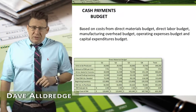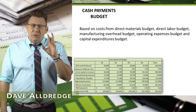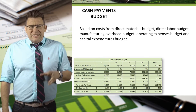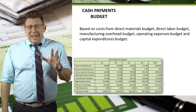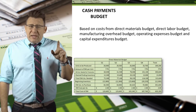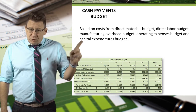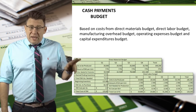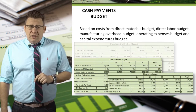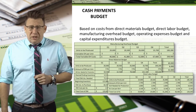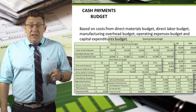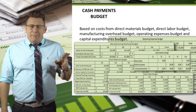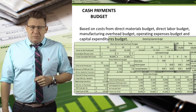The cash payment budget, often referred to as the cash disbursement budget, is a component of the cash budget. It is based off data from the direct materials budget, the direct labor budget, the manufacturing overhead budget, the operating expenses budget, and the capital expenditures budget.